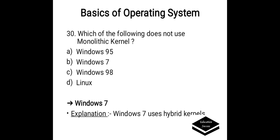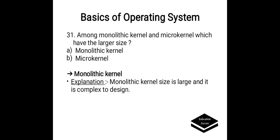Which of the following does not use a monolithic kernel? Option A. Windows 95, B. Windows 7, C. Windows 98, D. Linux. Correct answer is option B, Windows 7. Windows 7 uses a Hybrid kernel, not a monolithic kernel.